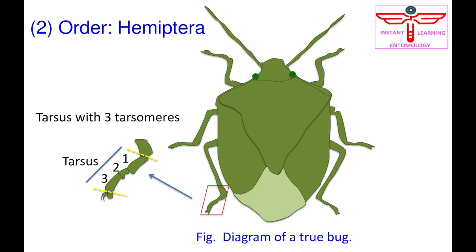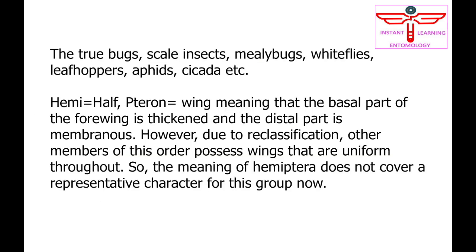'Hemi' means half and 'pteron' means wing, meaning that the basal part of the forewing is thickened and the distal part is membranous. However, due to reclassification, other members of this order possess wings that are uniform throughout, so the meaning of Hemiptera does not cover a representative character for this group now.